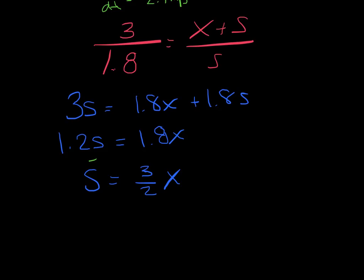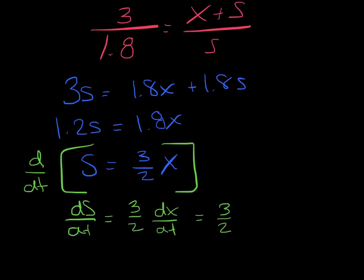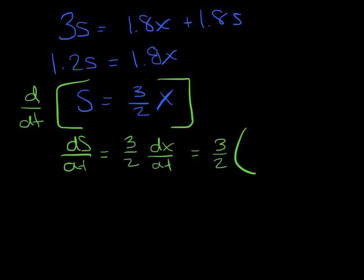Alright, so I'm going to take this derivative with respect to time. So I've got ds/dt equals 3/2 dx/dt. Now, notice it doesn't matter what the x variable is. I'm always going to get the same rate. So I have 3/2 times, we were walking away, I believe was at a rate of negative 2.4 meters per second. So times negative 2.4, I get a negative 3.6 meters per second.